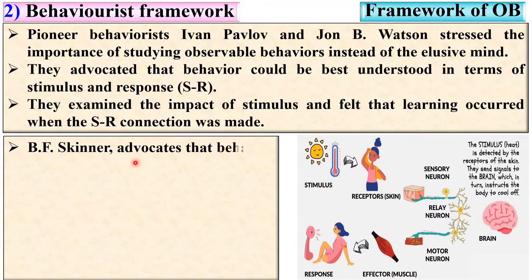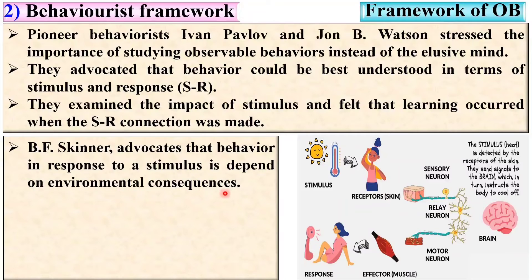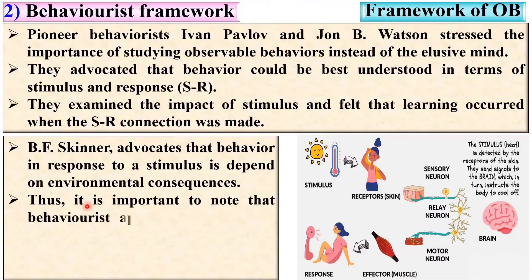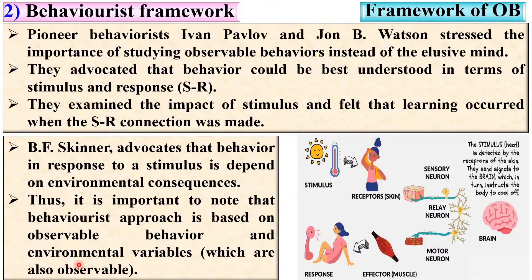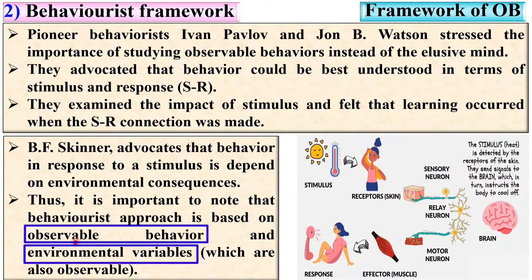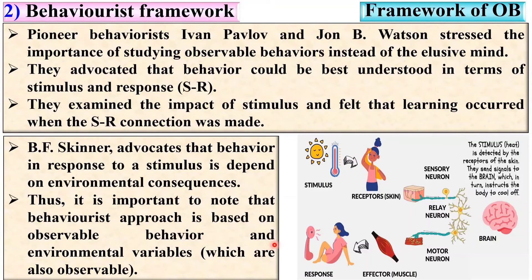B.F. Skinner advocates that behavior in response to a stimulus depends on environmental consequences. It is important to note that the behaviorist approach is based on observable behavior and environmental variables, both of which are observable. In the behaviorist framework there are two important parameters: observable behavior and environmental variables.